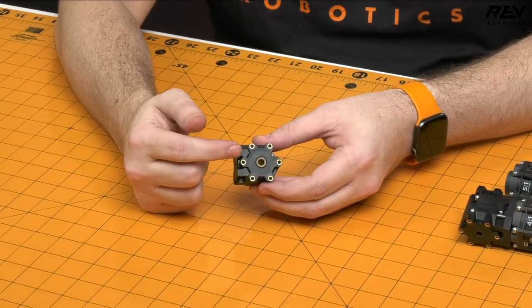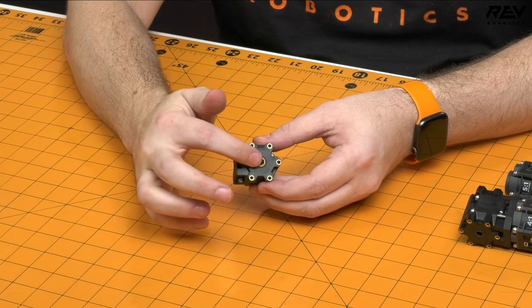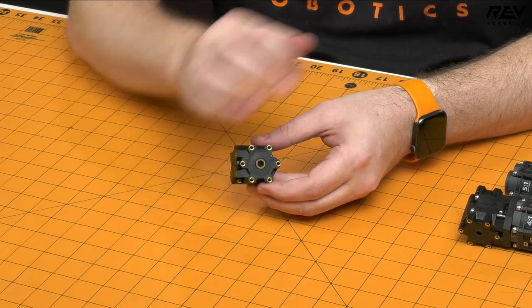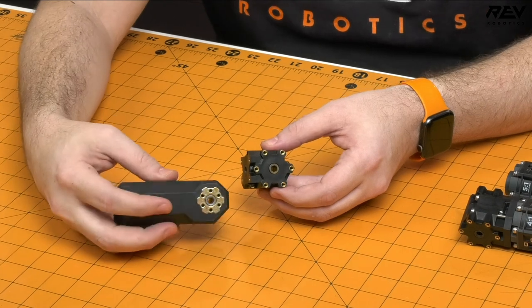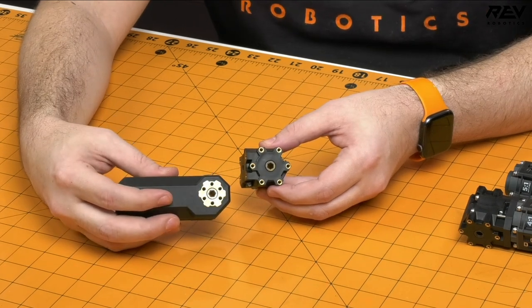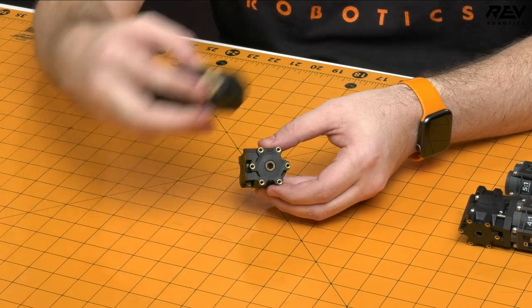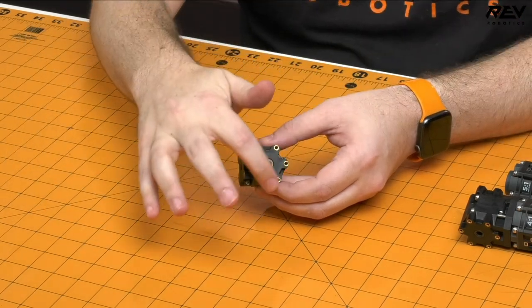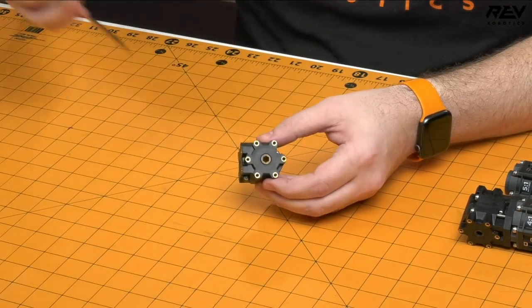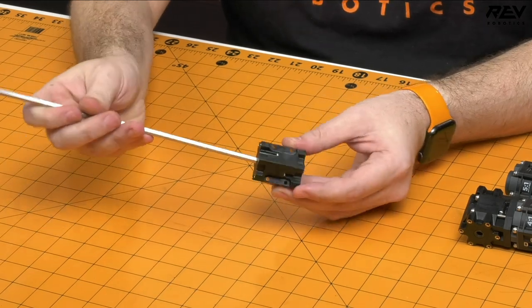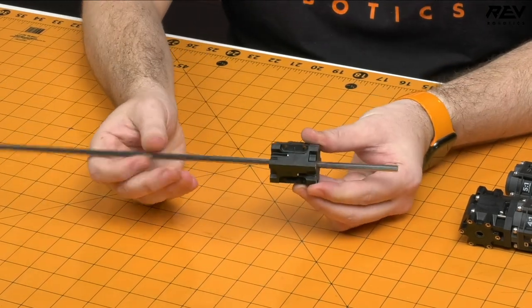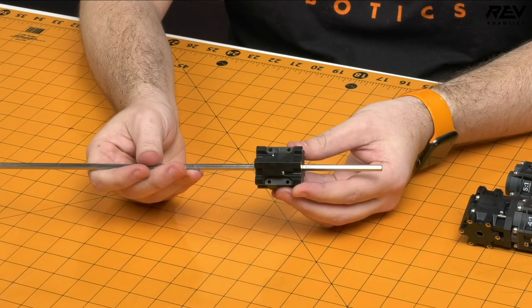You'll notice the first part about this gearbox is that it mounts on the same side that the through hex goes through. This is actually very similar to our core hex motor where you have the through bore with the mounting right on that surface. That allows you to do a lot of really great support right through it and that shaft will go all the way through the gearbox, giving you a lot of flexibility there.